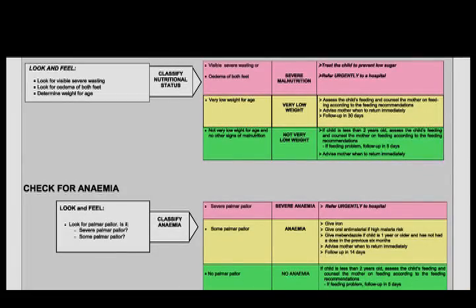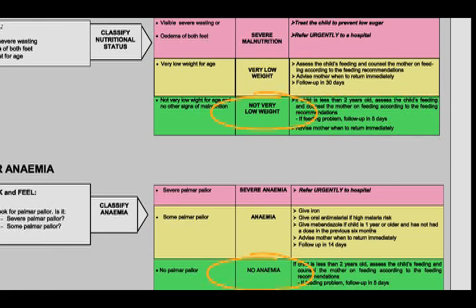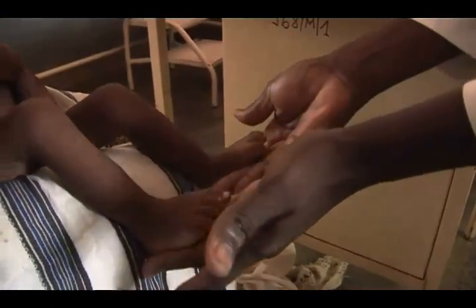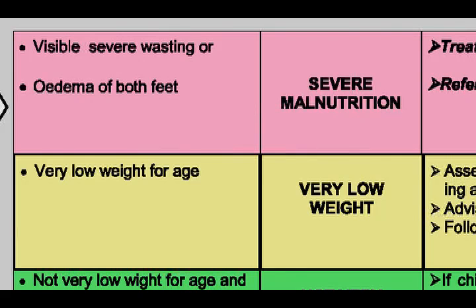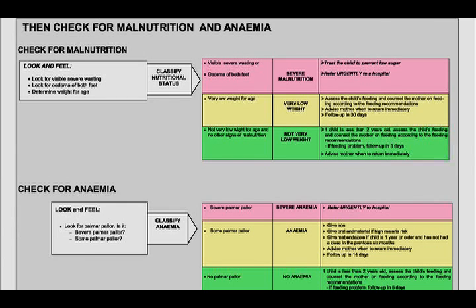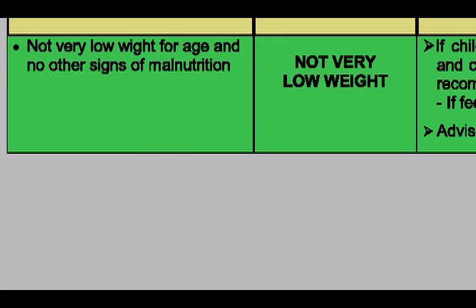There are three classifications for a child's nutritional status: severe malnutrition or severe anaemia; very low weight or anaemia; and not very low weight and no anaemia. If the child has visible severe wasting, severe palmar pallor, or oedema of both feet, the health worker classifies the child as having severe malnutrition or severe anaemia. If the child is very low weight for age or has some palmar pallor, the classification is very low weight or anaemia. If the child is not very low weight for age and there are no other signs of malnutrition, the child is classified as not very low weight and no anaemia.